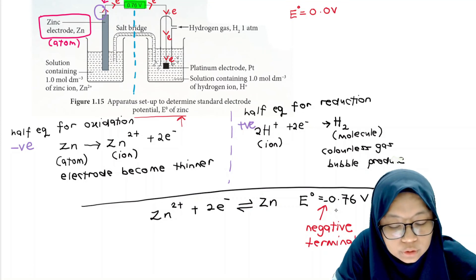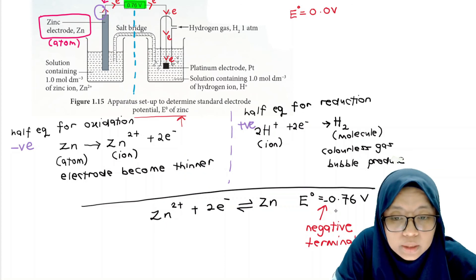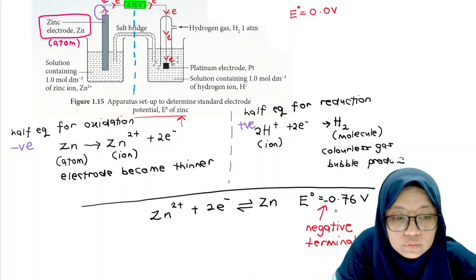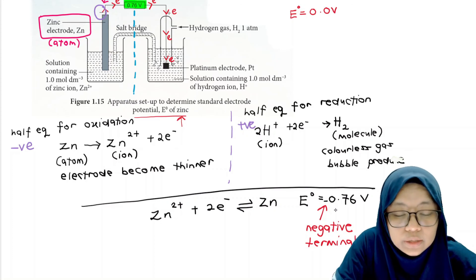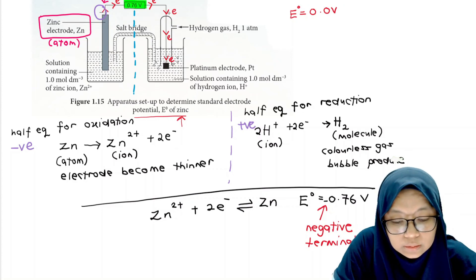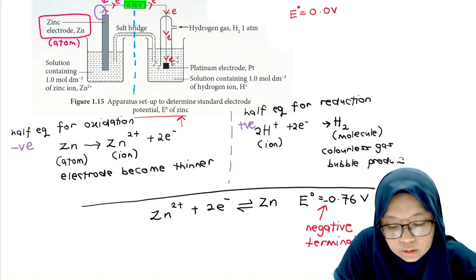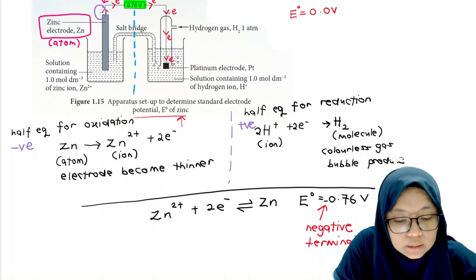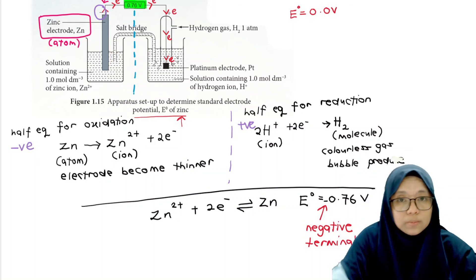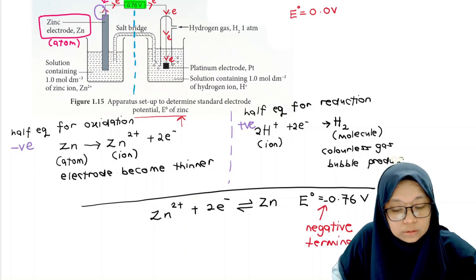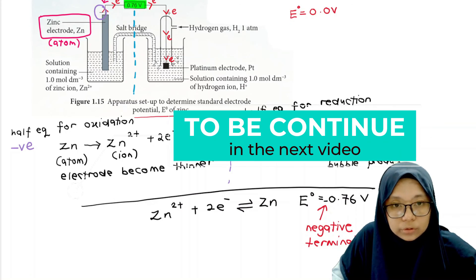The higher the E° value — or electrode potential — for a metal, the more electropositive the metal is, meaning it more easily releases electrons to the circuit and is more reactive. That is why in the standard electrode potential series, a more reactive metal will have a higher E° value. In the next video, I will give another example where the hydrogen ion undergoes oxidation instead of reduction, depending on the metal connected with the SHE.